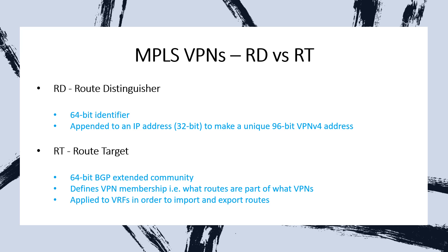The basic difference between an RD and RT, if you get asked in an interview, is that an RD is a 64-bit identifier that makes routes unique in an MPLS domain for a specific VRF or customer. On the other hand, RTs are used for VPN membership, where you exchange routes using RT community values. That should be your answer if asked about RD versus RT.